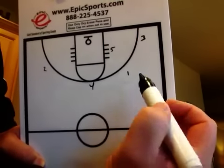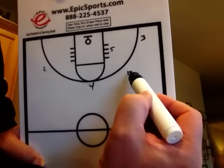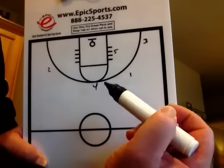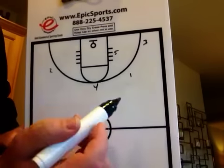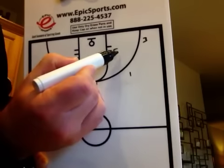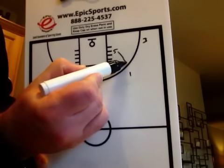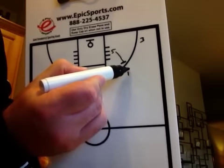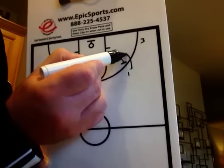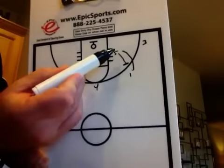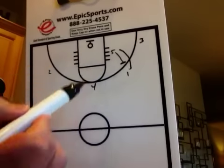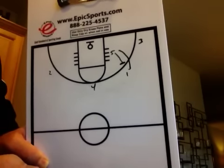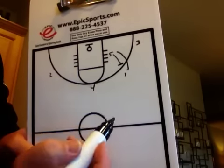Now let's look at something different. When this player swings the ball out to number three, here's what's going to happen. Five's going to pop up and set a screen for him. One's going to cut with him shoulder to shoulder, looking for a pass right there so that he can go in and make a layup. That's simple — that's part one.